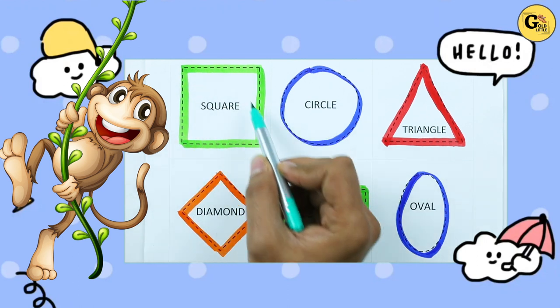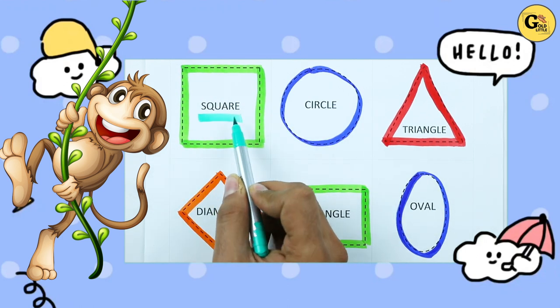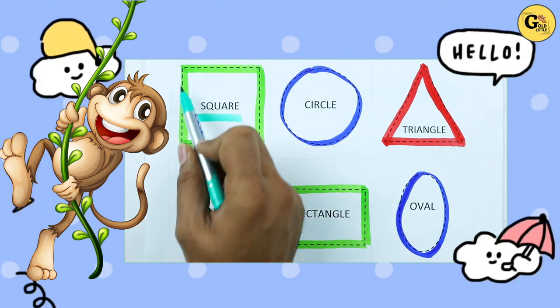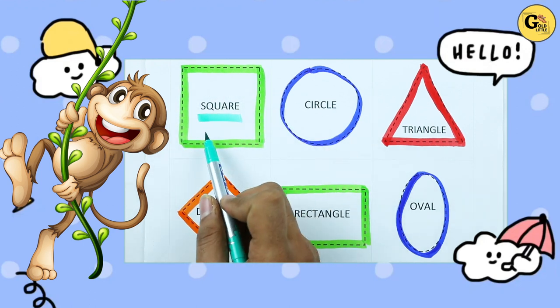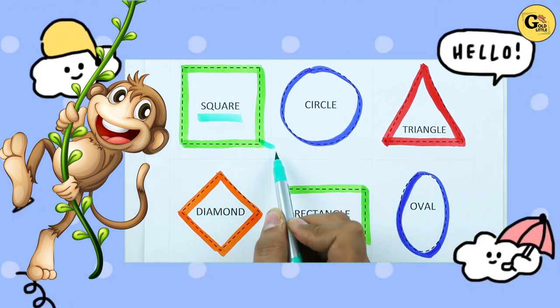Which shape is this? Tell me. Square. S-Q-U-A-R-E. It's a square with green color.